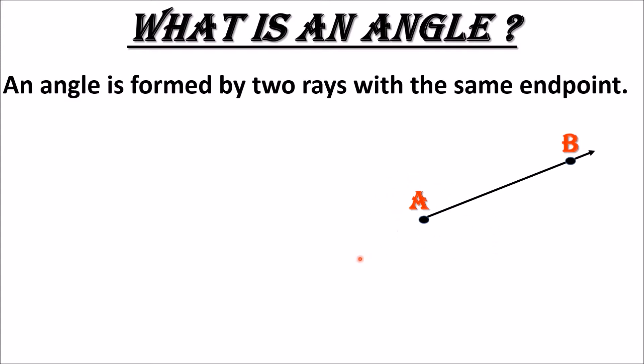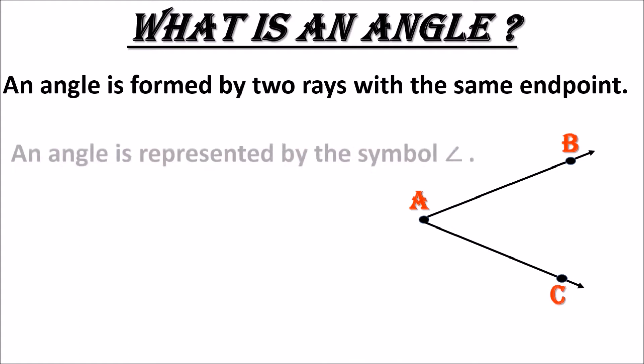So what is point A here? It is the end point of ray AB. Now, here we have another ray with the same origin — the same end point, that is A. We will take one more point on this ray — say it is C. So it is angle B, A, C.